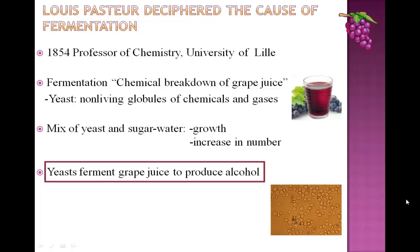As mentioned in a previous lecture, in 1854 Louis Pasteur became a professor of chemistry at the University of Lille in France. At that time, the general notion about fermentation was that it was the chemical breakdown of grape juice — no living organisms were involved — and therefore fermentation was considered to have occurred by spontaneous generation. However, Pasteur observed that when he mixed yeast with sugar water, there was growth in the size of yeast cells as well as an increase in their number. He concluded that it was the yeast cells that were fermenting the grape juice to produce alcohol.